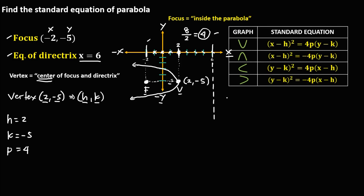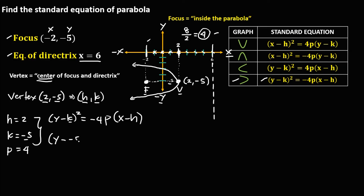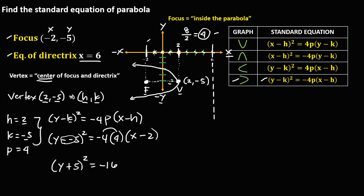Since this parabola opens to the left, the standard equation is (y − K)² = −4P(x − H). Substituting the values: (y − (−5))² = −4(4)(x − 2). Simplifying the double negative gives (y + 5)² = −16(x − 2). This is the standard equation of the parabola.